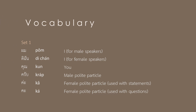ผม — I, for male speakers. ดิฉัน — I, for female speakers. คุณ — you. ครับ — male polite particle. ค่ะ — female polite particle, used with statements.